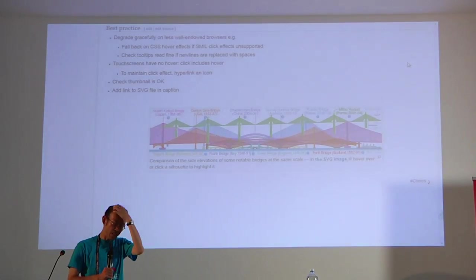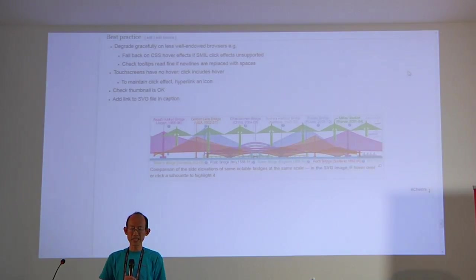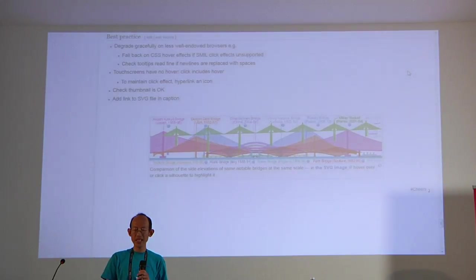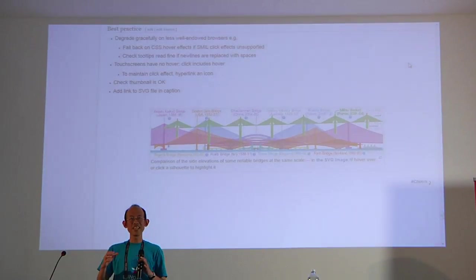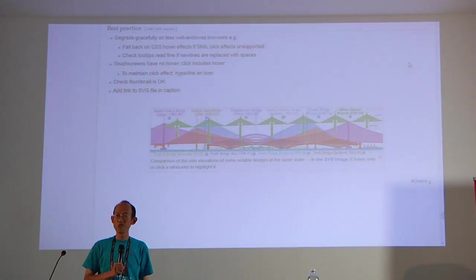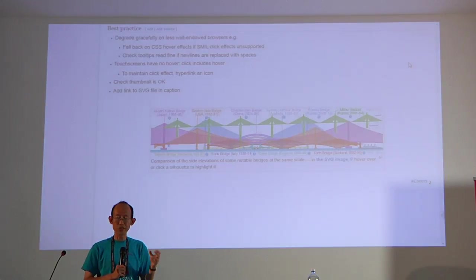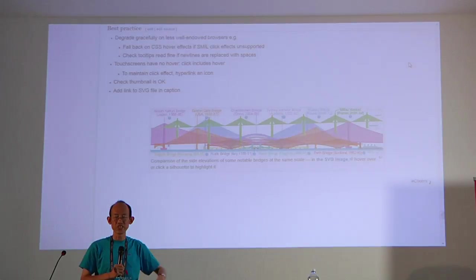Now, best practices. Not all browsers support SVG animation or interactive SVG. It's very important that these SVGs degrade gracefully, so you don't get a bad crash on some browsers. The way I do that is: first make it look okay as a thumbnail, then add CSS hover effects, then add SMIL effects. If the browser doesn't support SMIL, it can still show the CSS — and if that doesn't work, at least there's a respectable static picture. Also, in tooltips on IE, new lines are replaced by spaces and everything munches into a single line, so check that it reads correctly.